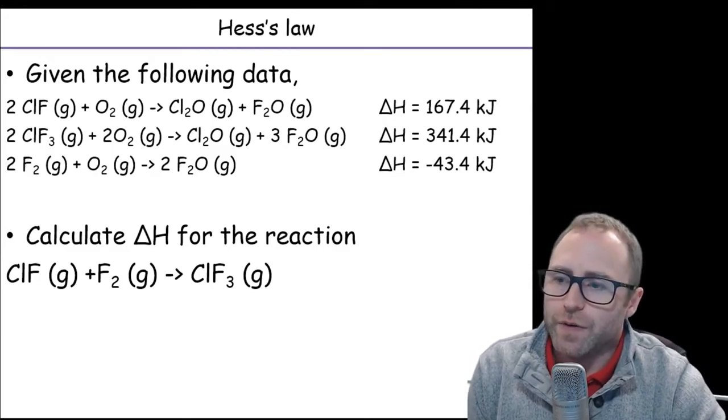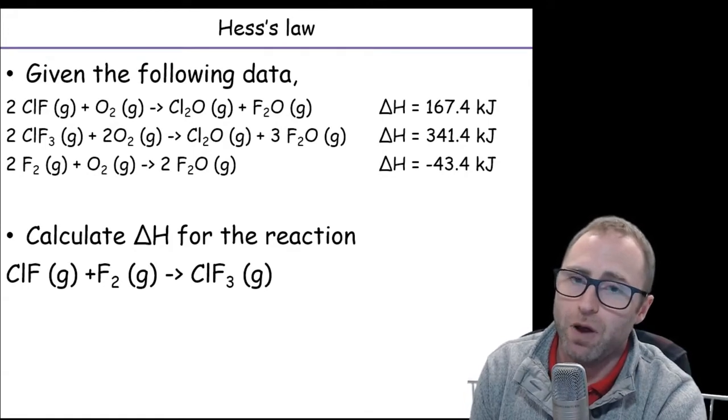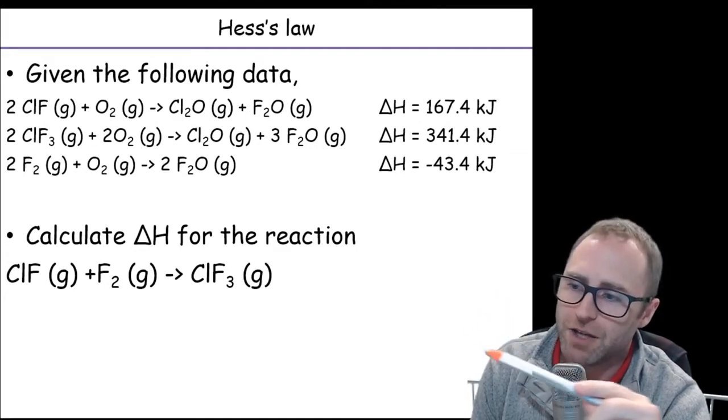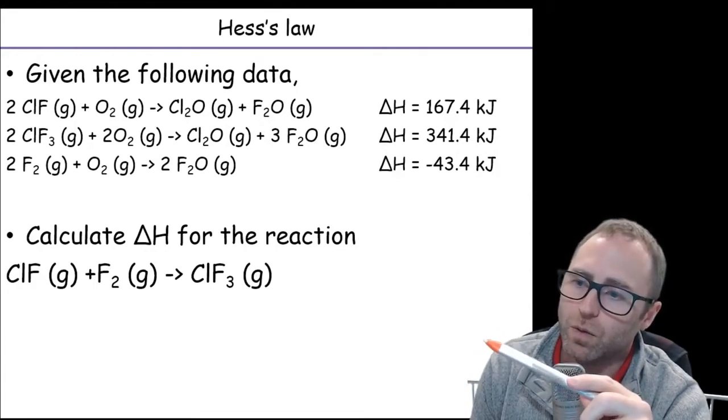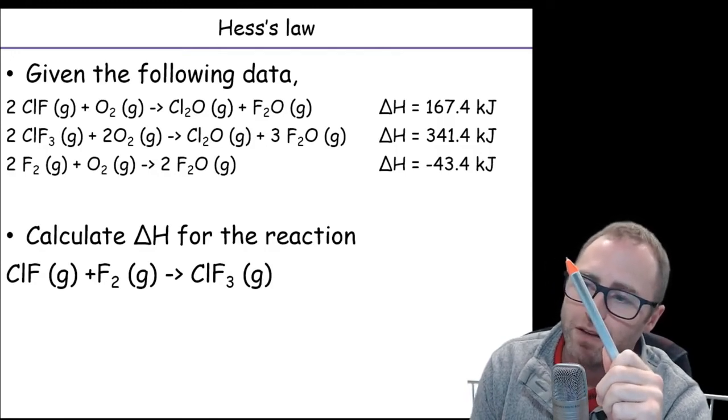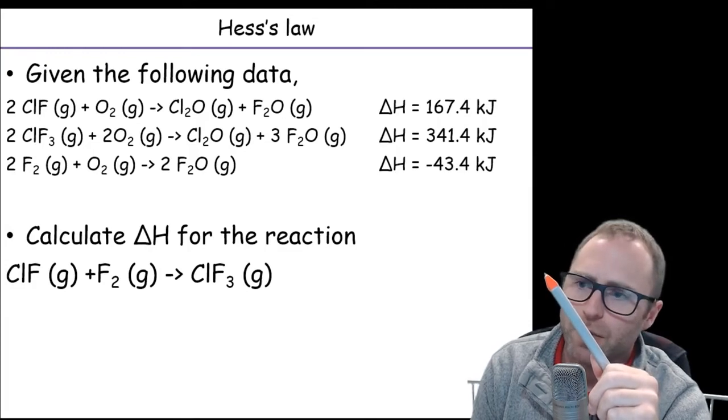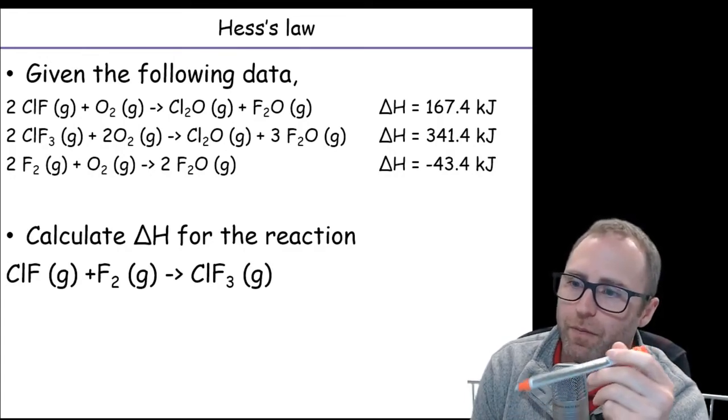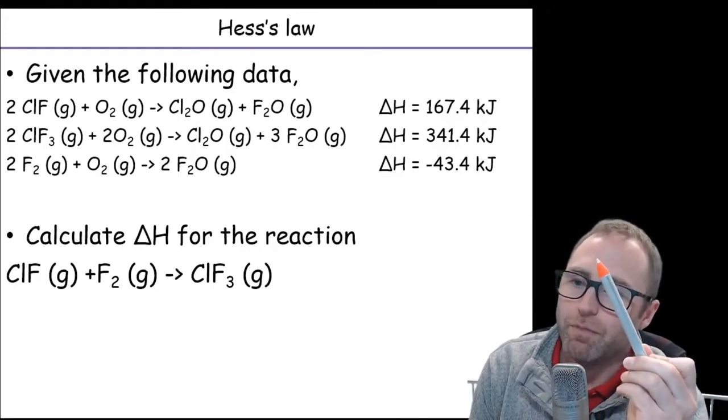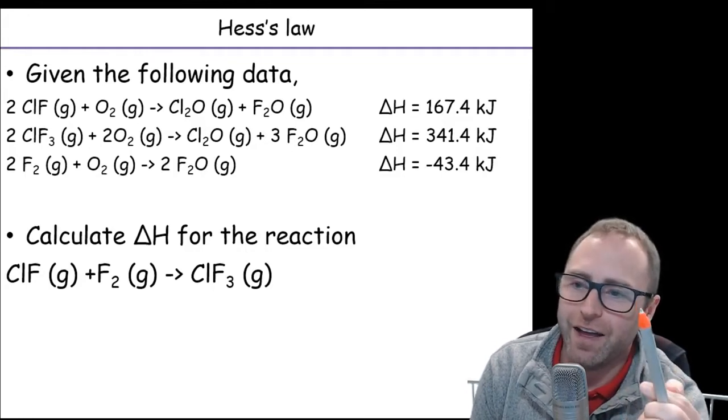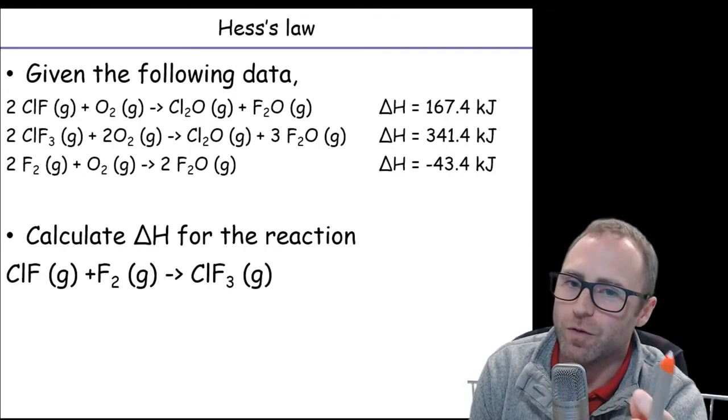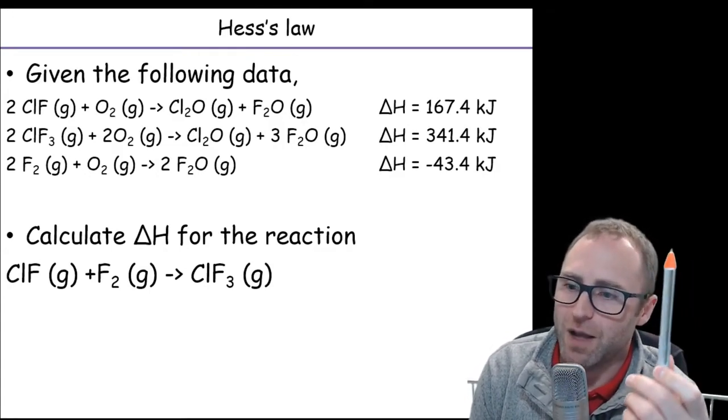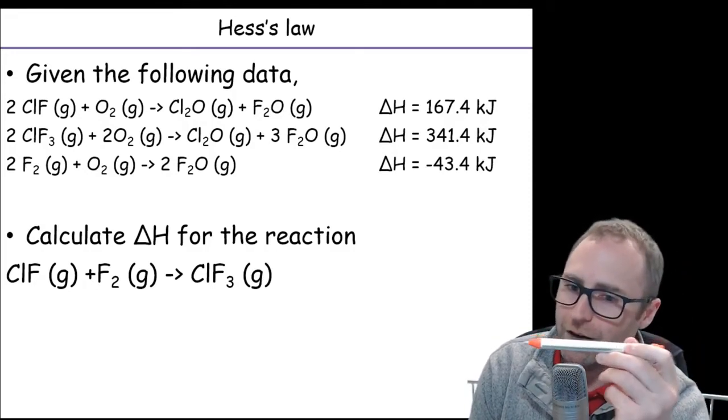What I would try to orient you to is the stuff at the top has components, like those three equations up at the top there, they have components, and either their reactants or their products that match up to components here in the bottom reaction. So for example, the top reaction, the chlorine fluoride, monochlorine monofluoride reactant is going to be seen in the reaction of interest. It's up there and it's down at the bottom. The ClF is going to be a reactant for both that top equation and the bottom equation.